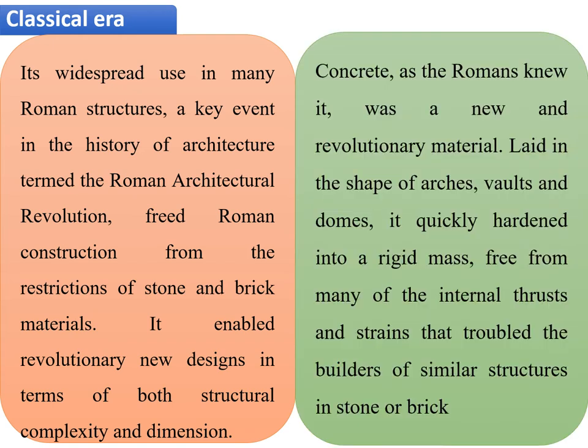Concrete, as the Romans knew it, was a new and revolutionary material. They used it to lay the shapes of arches, walls, and domes. It quickly hardened into a rigid mass, free from many of the internal thrusts and strains that troubled builders of similar structures in stone or brickwork. They thus obtained a better product as an alternative to stone and brick, allowing them to make structures of their own design.